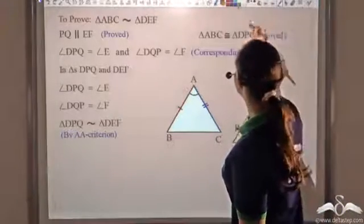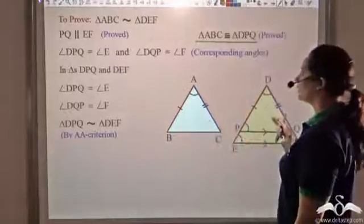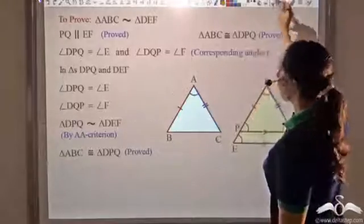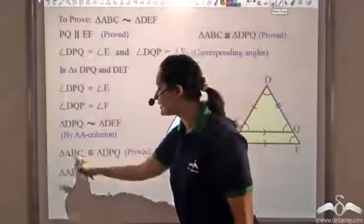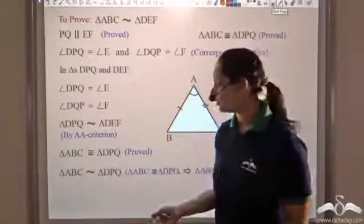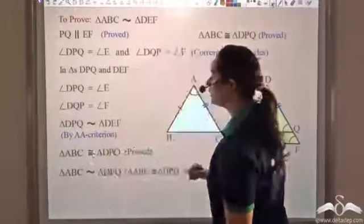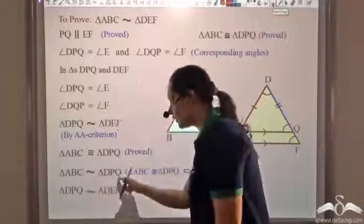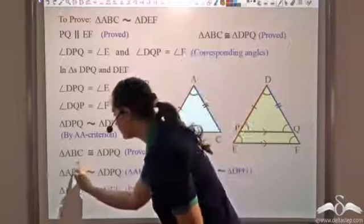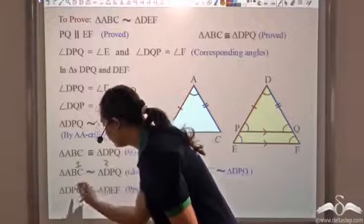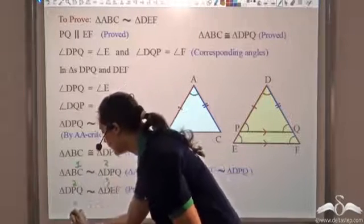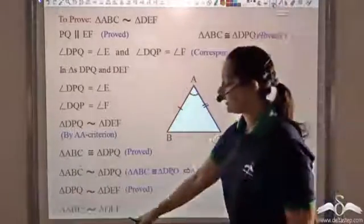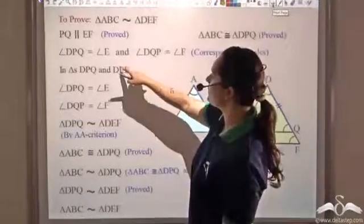I already know that triangle ABC is congruent to triangle DPQ. Since congruency implies similarity, these two triangles are also similar. I have already proved that triangle DPQ is similar to triangle DEF. So triangle ABC is similar to DPQ, and DPQ is similar to DEF — therefore, by transitivity, triangle ABC is similar to triangle DEF, which is precisely what we wanted to prove.